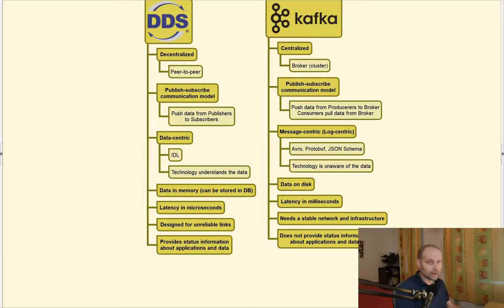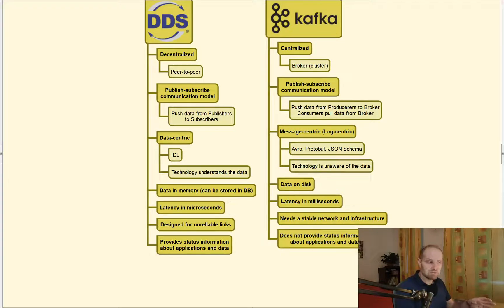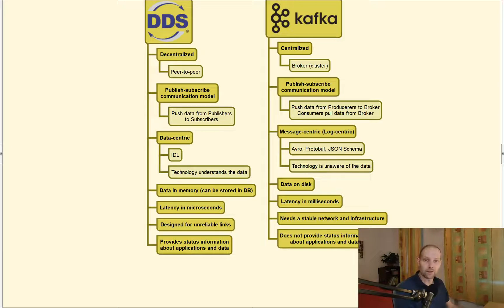DDS provides information about applications and data about their state — whether an application is in the system or not. On the other hand, Kafka doesn't provide any information about the application; everything is loosely coupled. So when you need information about the components of your system and their state, DDS can provide it.